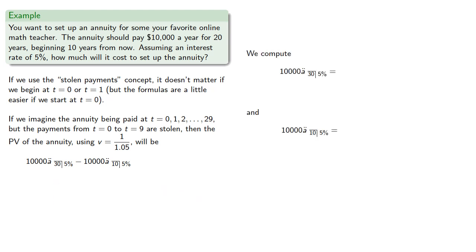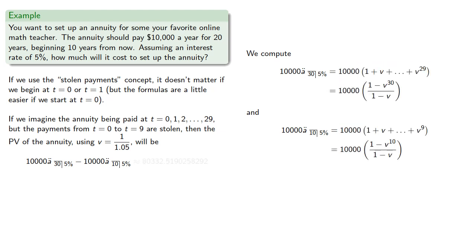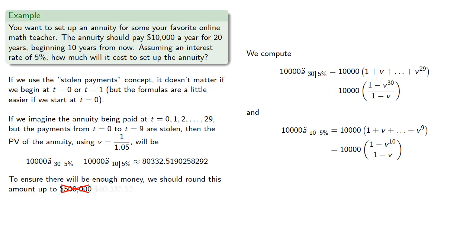And we can compute these values separately. To ensure there will be enough money, we should round this up to the nearest half million, to the nearest penny.